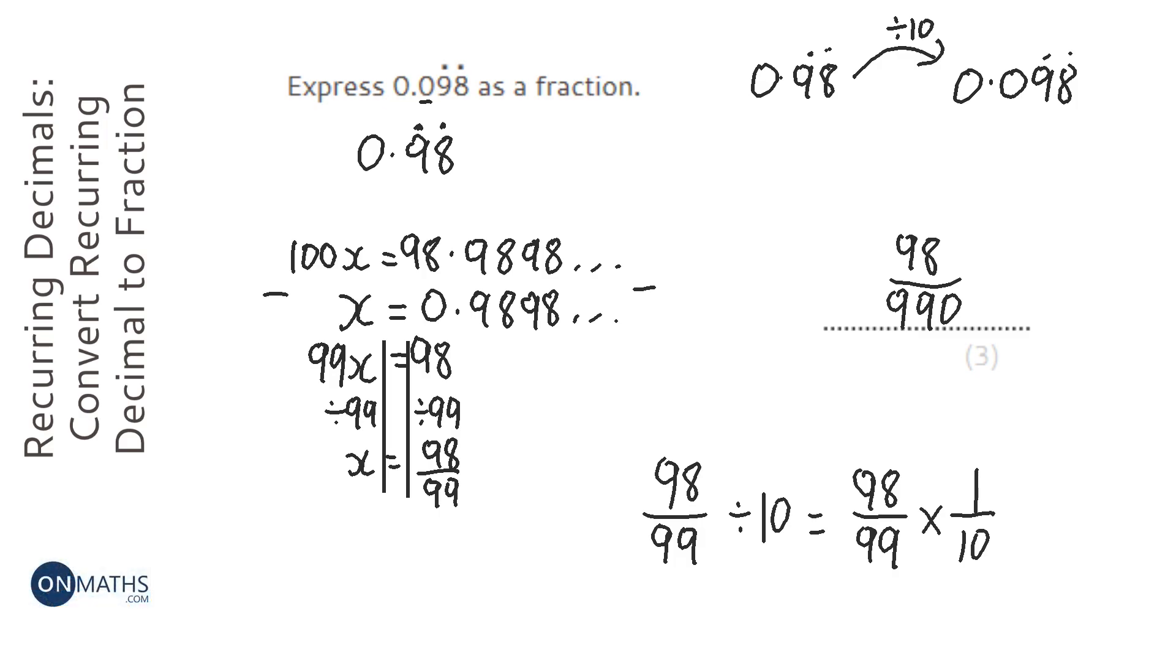Now there's something else I can do. I can cancel this down. So I can halve top and bottom. So 495 at the bottom, and half of that is going to be 49.